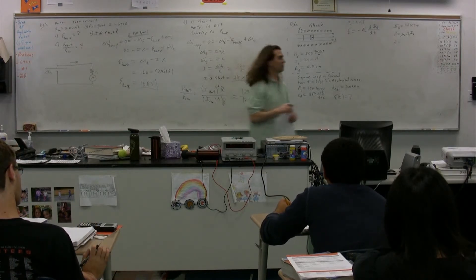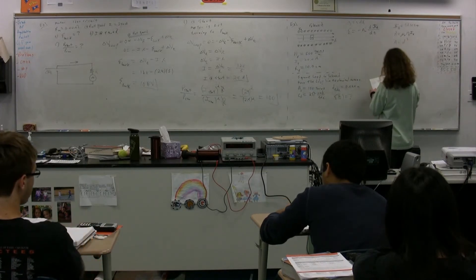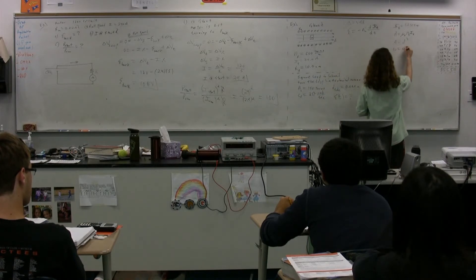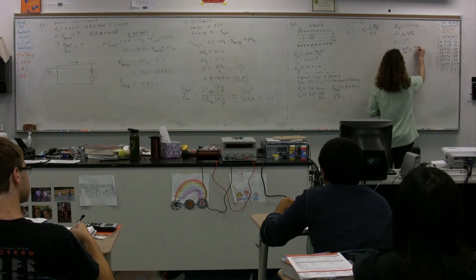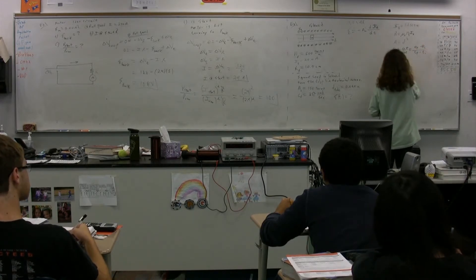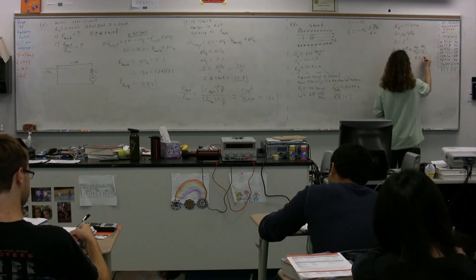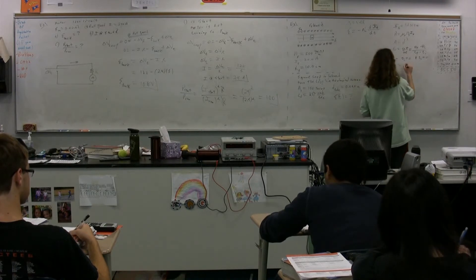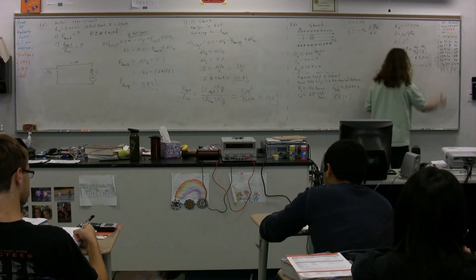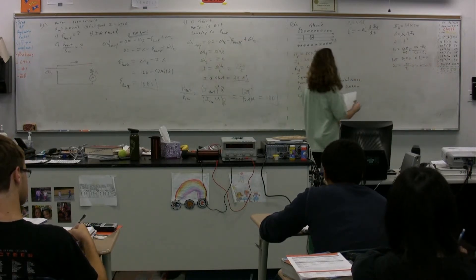The area of the square loop is d squared. Then we have cosine of theta. We know that angular velocity equals change in theta over change in time. We let theta initial equal zero and time initial equal zero, so angular velocity equals theta over time, meaning theta equals angular velocity times time. We can substitute omega times t in for theta.